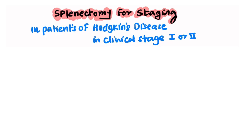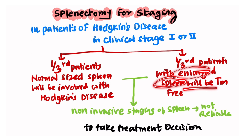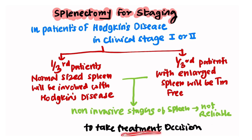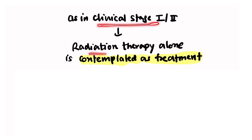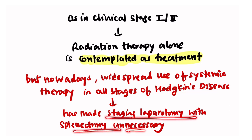The role of splenectomy for staging is done in Hodgkin's disease in clinical stage one or two. In this stage, one third of patients have a normal-size spleen but have Hodgkin's disease, while one third have an enlarged spleen but are free from tumor. Due to this varied presentation, non-invasive staging of the spleen is not reliable for treatment decisions, since radiation therapy alone is contemplated at stage one and two. However, widespread use of systemic therapy in all stages has made staging laparotomy with splenectomy unnecessary.